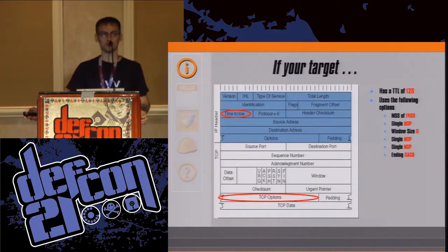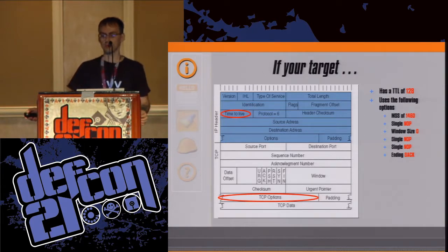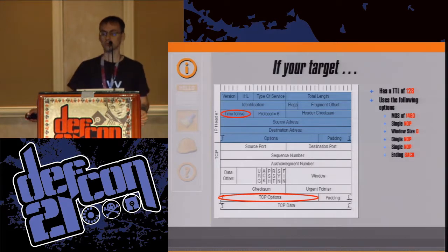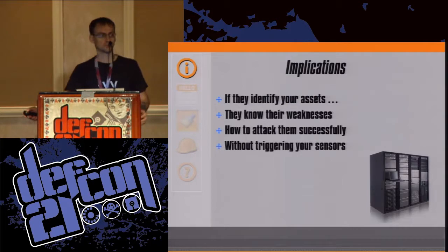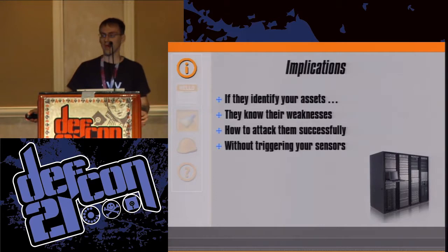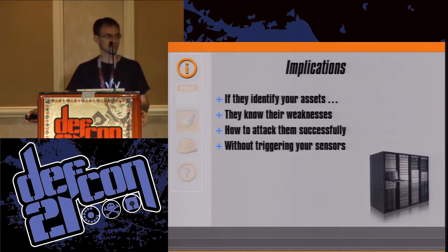...and uses the following options — maximum segment size of 1460, followed by a single NOP, a Windows scale of zero, followed by two NOPs, and ends in a SACK — then your target is likely a Windows 2003 server. Implications: if they identify your assets, they know their weaknesses and how to attack them successfully without triggering your sensors. Precision, basically.